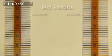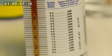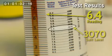Remove the strip and determine where the top of the light color peak stops. This example shows a reading of 6.4. Use this value to compare to the table on the bottle to find the salt level. In this case, 6.4 indicates a salt level of 3,070 parts per million.